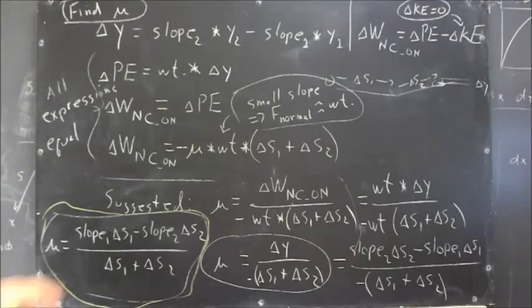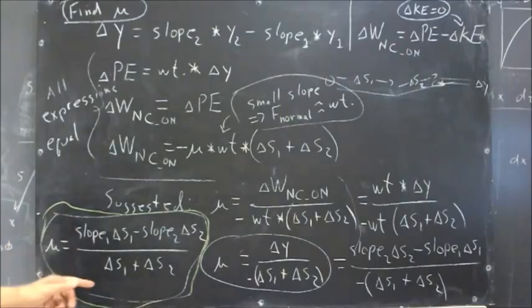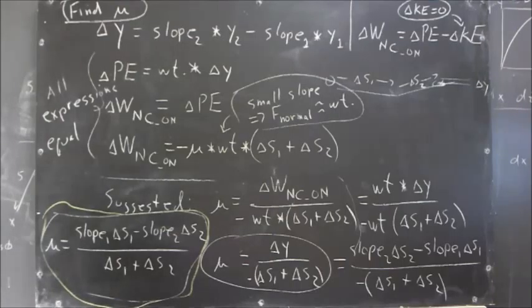Now, I ran out of room here. But the final expression for the coefficient of friction in a small slope case is then this. We multiply both numerator and denominator by negative 1 and we get this expression for the coefficient of friction.